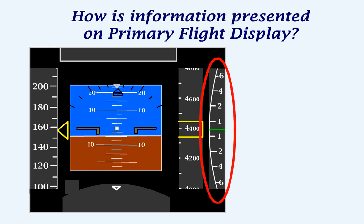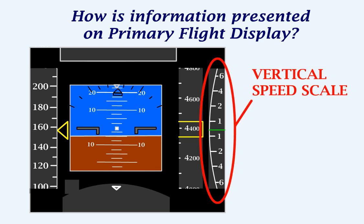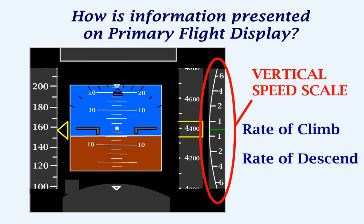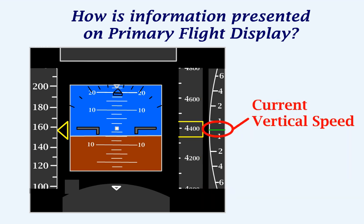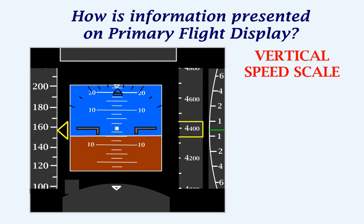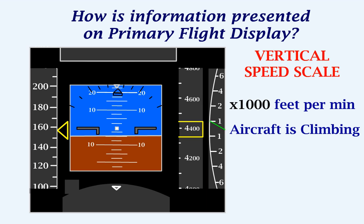On the right of the altimeter we have the vertical speed scale, which indicates the rate at which the aircraft is climbing or descending. This represents the current vertical speed. The scale has to be read in thousands of feet per minute. If the pointer points upward, the aircraft is climbing at that many feet per minute; if the pointer points downward, the aircraft is descending at that many feet per minute.